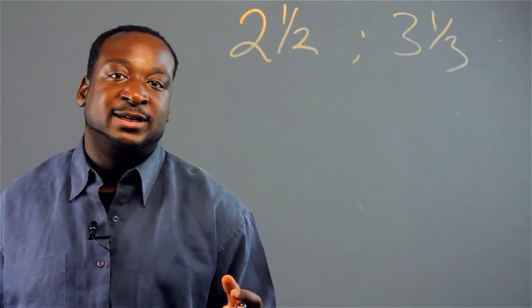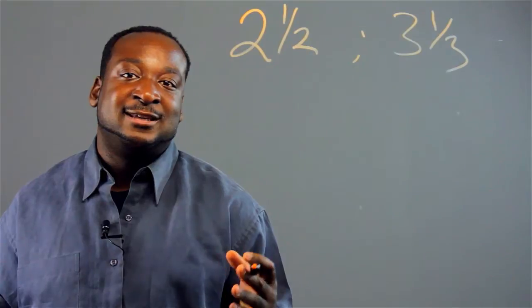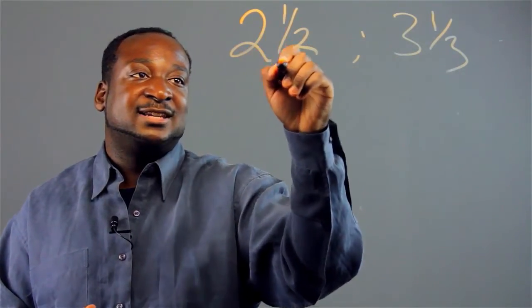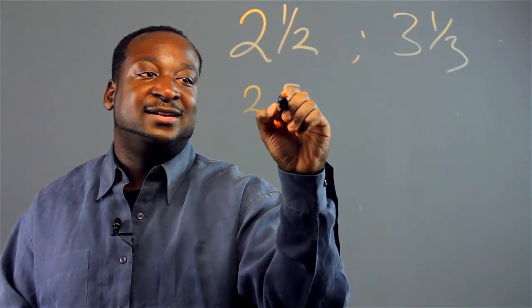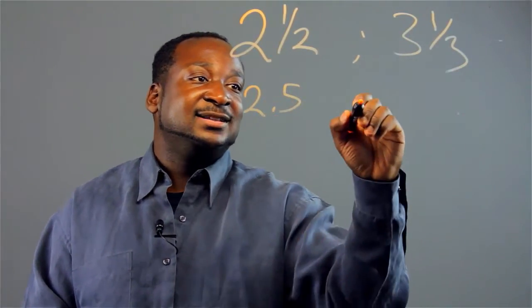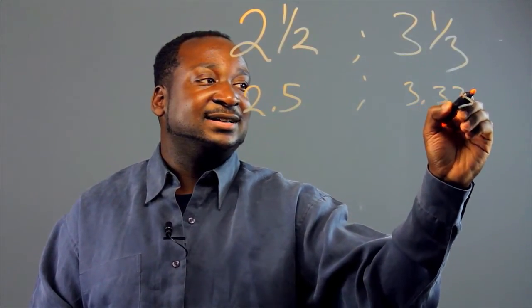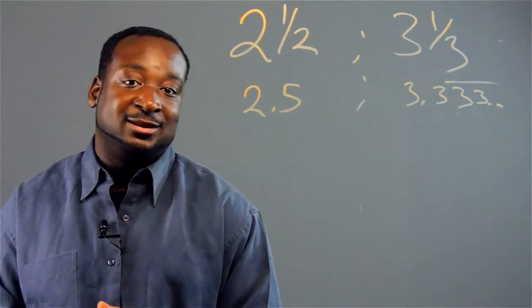The first thing you want to do is you want to convert these numbers into their decimal point equivalents. So this number here, it'll be 2.5. And this number over here, this will be 3.333, on and on, with a repeating 3.